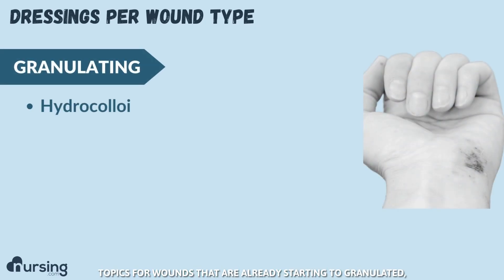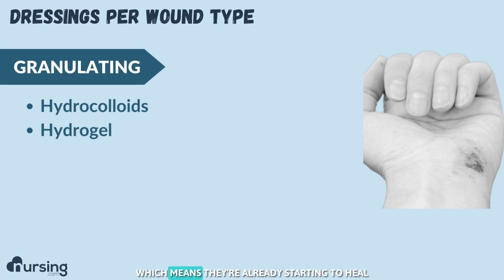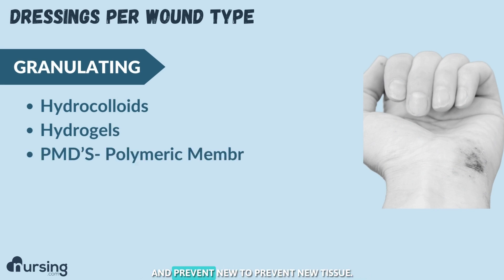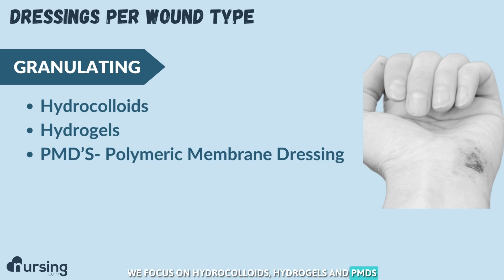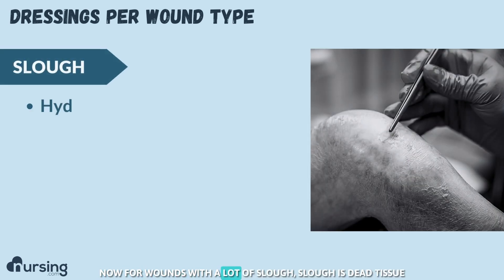For wounds that are already starting to granulate — meaning they're starting to heal and present new tissue — we focus on hydrocolloids, hydrogels, and PMDs.